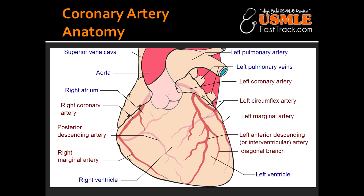What is the most posterior part of the heart? The most posterior part of the heart is the left atrium. What happens when there is an enlargement of the left atrium? Enlargement of the left atrium can lead to dysphagia due to compression of the esophagus, or hoarseness due to compression of the left recurrent laryngeal nerve, which is a branch of the vagus nerve.